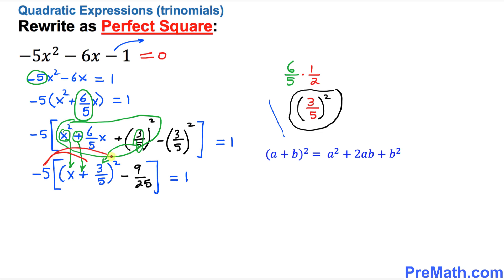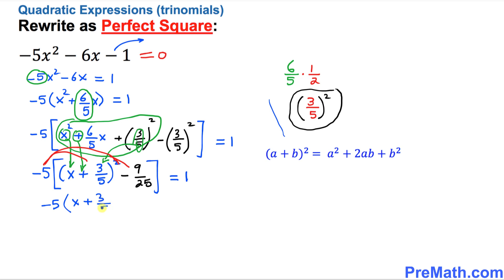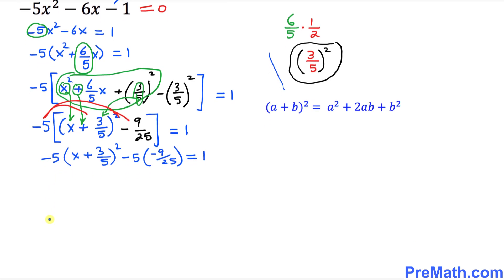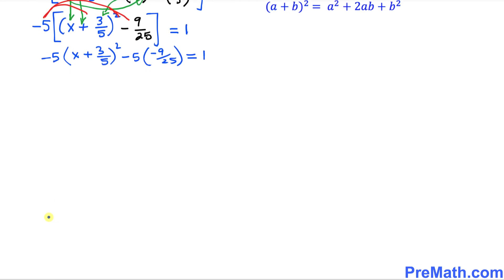The next step is to distribute the negative 5 with both terms. That gives us: negative 5 times (x + 3/5)² minus 5 times negative 9/25 equals 1. Simplifying, negative times negative is positive, and 5 over 25 reduces, giving us negative 5(x + 3/5)² + 9/5 equals 1.